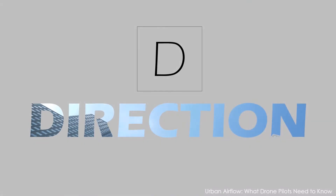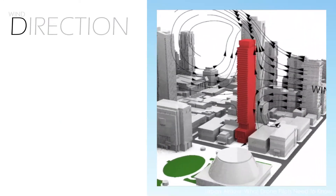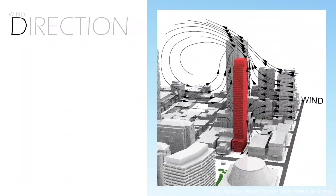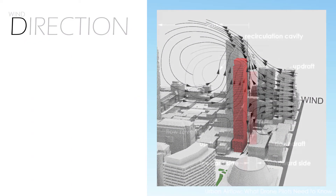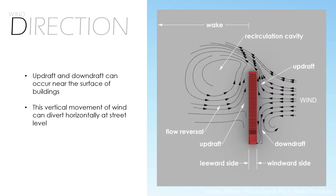Urban airflow between and around structures can also change direction. Tall buildings within a surrounding low-rise urban scape redirect flow, causing vertical and horizontal currents. Vertical flow includes updraft and downdraft. On the windward side of a tall building, downdraft causes street level flow to divert horizontally away from the building. Alternatively, the low pressure zone on the leeward side draws horizontal flow towards the base of the building, which converges into vigorous updraft. These wake features, which include flow reversal and updraft, can persist for the entire height of a tall building, and the recirculation cavity driven by this motion can extend downstream for up to twice the building height.